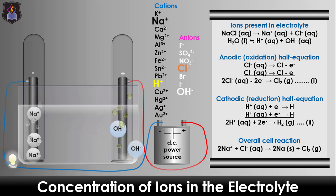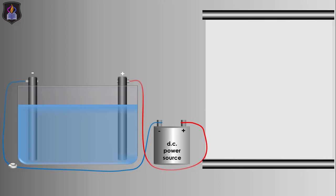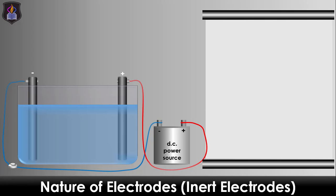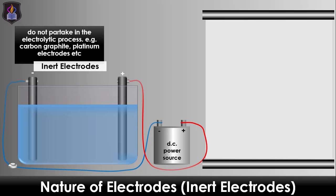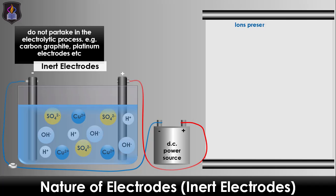The last factor is the nature of electrodes. Here we will be reclassifying our electrodes based on reactivity into inert and active. An inert electrode is one that does not participate in the electrolytic process — it does not determine the ions discharged at the anode. Examples are graphite and platinum electrodes.